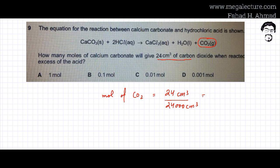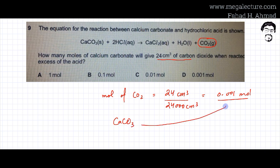This gives 0.001 moles. If you have 0.001 moles of CO2, then according to the equation, the ratio of CO2 to calcium carbonate is the same ratio. It's a 1:1 ratio, which indicates that calcium carbonate is also going to have exactly the same moles.